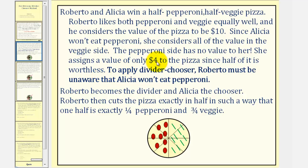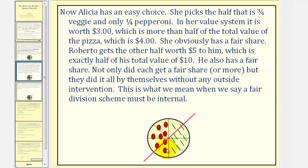For Alicia, a fair share would be worth two dollars. To apply the divider-chooser method, Roberto must be unaware that Alicia won't eat pepperoni. So Roberto becomes the divider and Alicia the chooser. Roberto then cuts the pizza exactly in half such that one half is one-fourth pepperoni and three-fourths veggie — one of the four slices is pepperoni and three of the four slices are veggie.